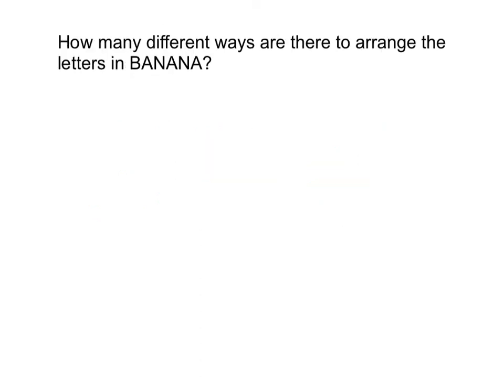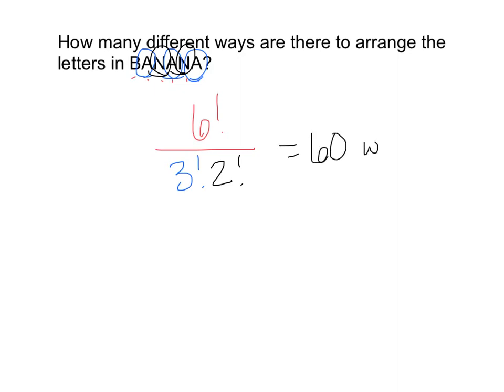How many different ways are there to arrange the letters in banana? I have six letters, so we start with six factorial. But don't forget — you have to factor out those repetitions. There are three A's, so I have to factor out all the different ways you can arrange three things, which is three factorial. And there are two N's, so I have to factor out two factorial for those. So we have six factorial over three factorial times two factorial, and we end up with 60 ways to arrange the letters in banana.